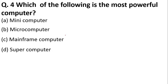Which of the following is the most powerful computer — mini computer, micro computer, mainframe computer, or super computer? The correct answer is option D, super computers. Super computers can do trillions of calculations per second and are used in weather forecasting and space-related work. India's super computer is called Param, which means supreme.